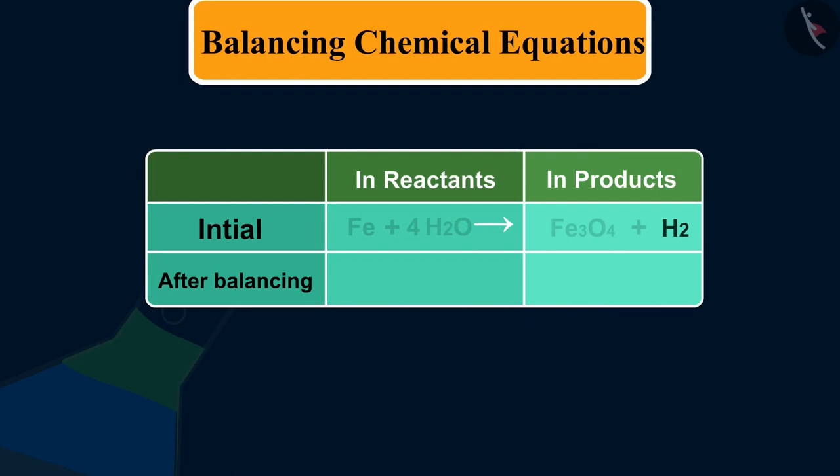So to balance the hydrogen atom, the number of H2 molecules on the right side to be 4. Now, to balance iron, on the left side, we take 3 atoms of iron.